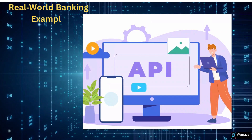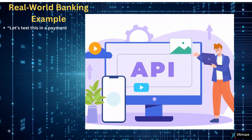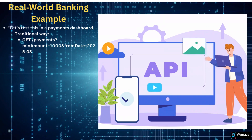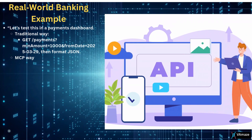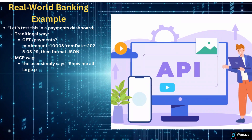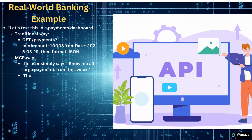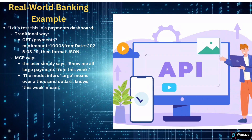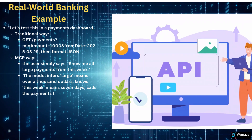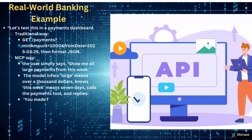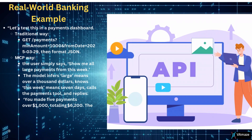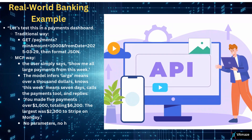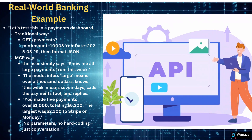Real-world banking example: let's test this in a payments dashboard. Traditional way: GET /payments?minAmount=1000&fromDate=2025-03-29, then format JSON. MCP way: the user simply says, 'Show me all large payments from this week.' The model infers 'large' means over $1,000, knows 'this week' means seven days, calls the payments tool, and replies: 'You made five payments over $1,000 totaling $6,200. The largest was $2,300 to Stripe on Monday.' No parameters, no hard coding — just conversation.